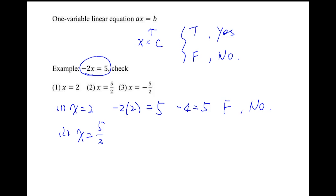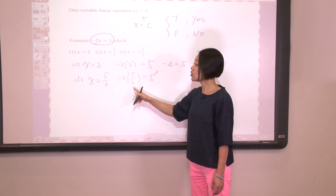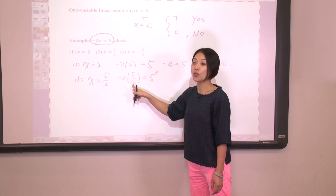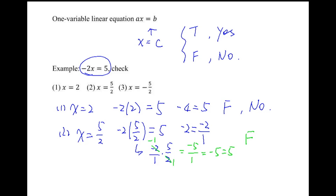Let's check the second one, x equals 5 over 2. Plugging in, the left-hand side is negative 2 times 5 over 2. We can convert the integer to a fraction: negative 2 written as negative 2 over 1, giving us negative 2 over 1 times 5 over 2. Reducing by dividing 2 from both top and bottom gives us negative 5 over 1, that is negative 5. But the right-hand side is 5, so this is a false statement — the answer is no.